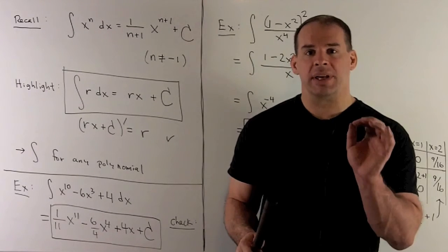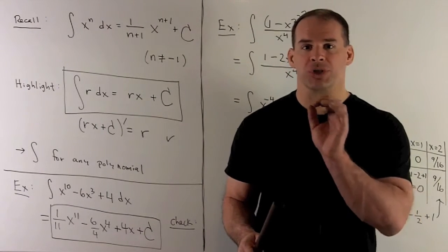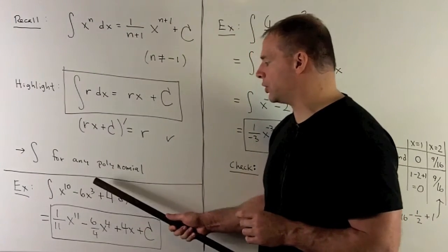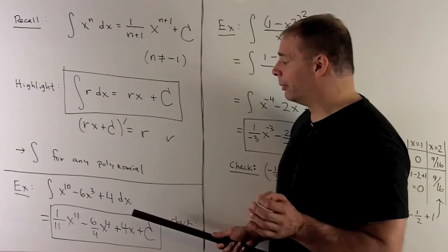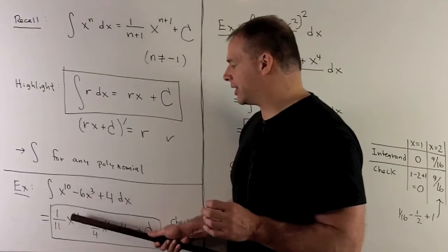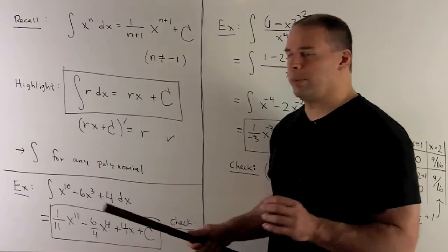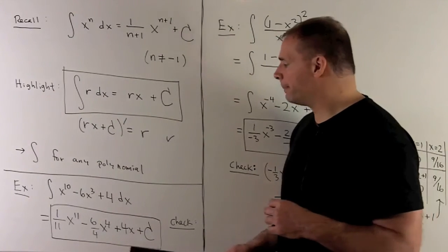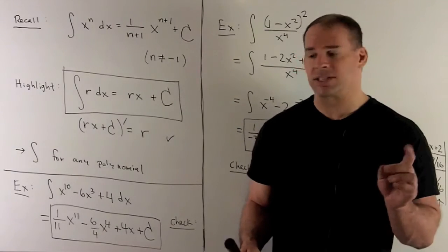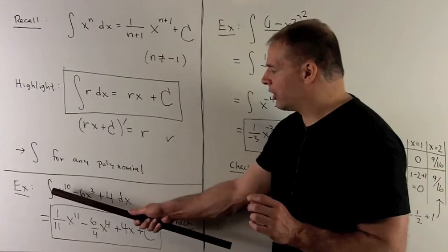Putting all this together, we can now take the indefinite integral of any polynomial — integer powers of x where those integers are zero or positive. For example, the indefinite integral of x to the 10 minus 6x cubed plus 4 dx: just go through term by term, add one and flip it over. For x to the 10, we get x to the 11 over 11. For x cubed, we add 1 to get x to the 4th, divide by 4, giving minus 6 over 4 times x to the 4th. For the 4, we multiply by x. Then add the constant of integration. Check your work by taking the derivative.